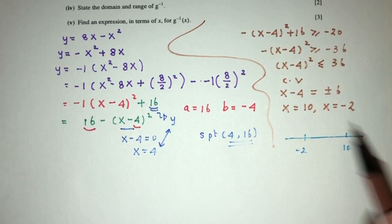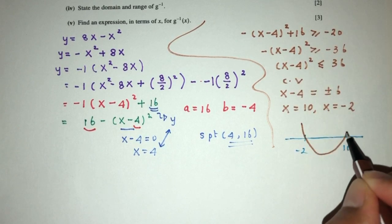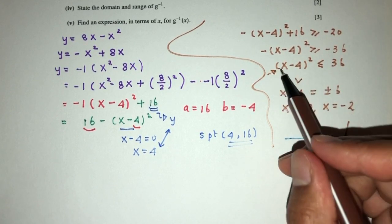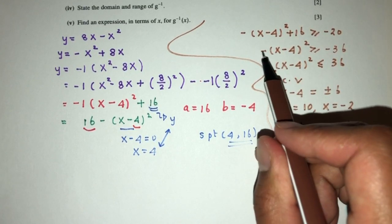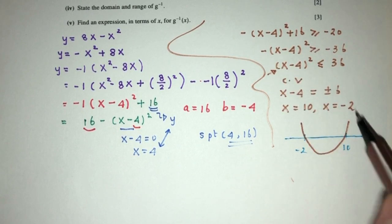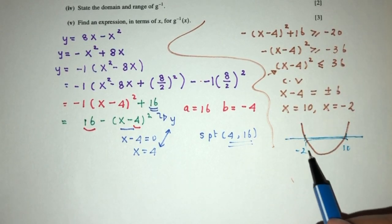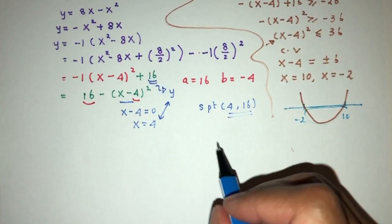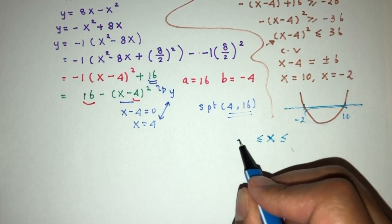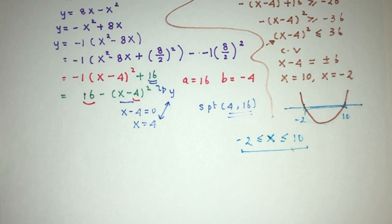Considering the shape of the graph — since the coefficient of x squared inside (x - 4)² is plus 1, it is a minimum curve shape. The inequality requires values less than 36, which corresponds to the region between the roots. So the solution is -2 < x < 10.